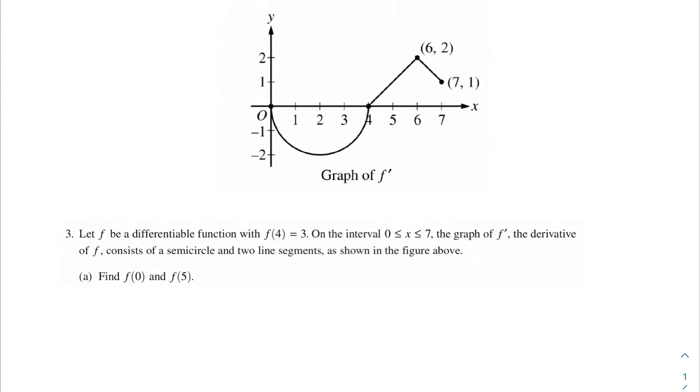In this video, we're going to be talking about free response question number three. This problem says: let f be a differentiable function with f(4) = 3. On the interval 0 ≤ x ≤ 7, the graph of f prime, the derivative of f, consists of a semicircle with two line segments as shown in the figure above.